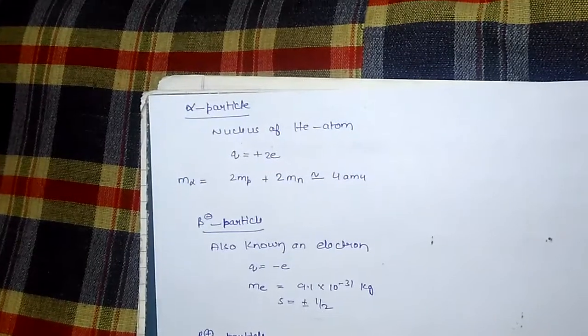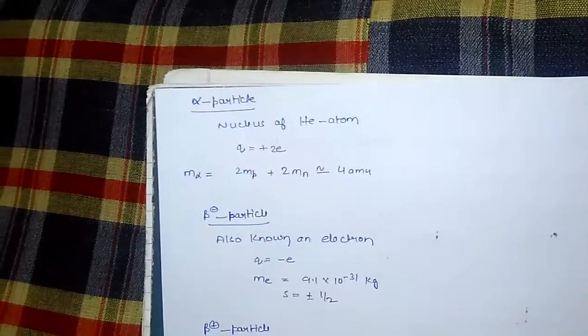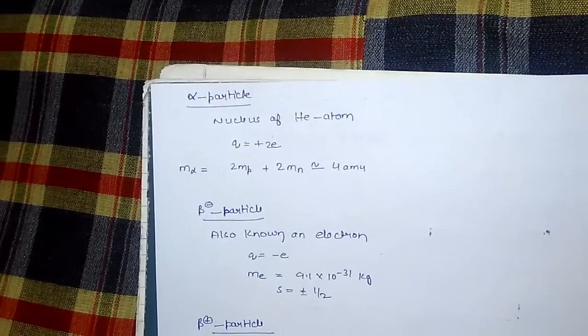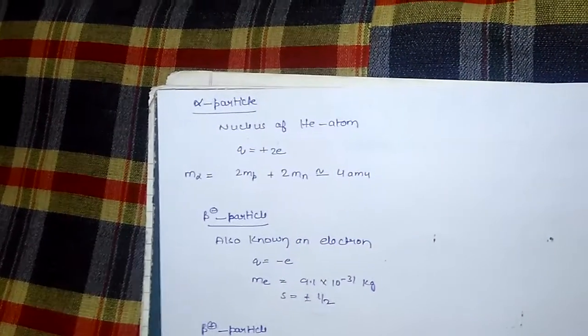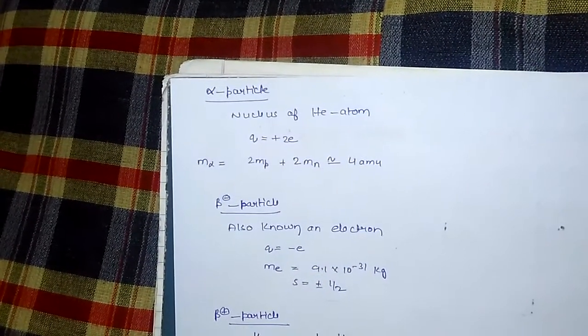Alpha particle: Alpha particle is the nucleus of helium atom. Its charge equal to plus 2e. Mass of alpha particle equal to 2 into mass of proton plus 2 into mass of neutron, approximately equal to 4 amu.